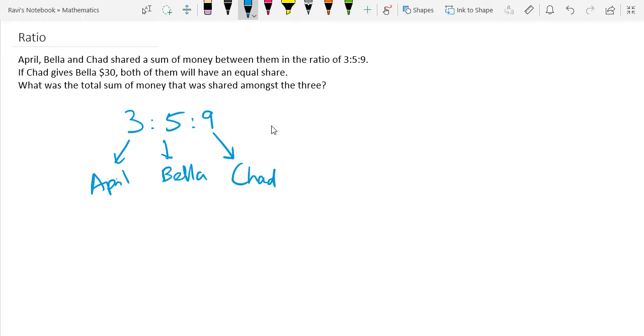So what was the total sum of money that was shared among the 3? To do this, what we first need to do is to look at the total number of parts that we have. So we have 3 plus 5 plus 9, which gives us 17.